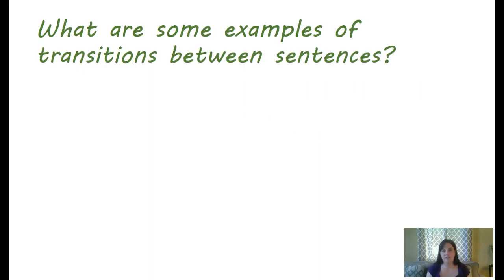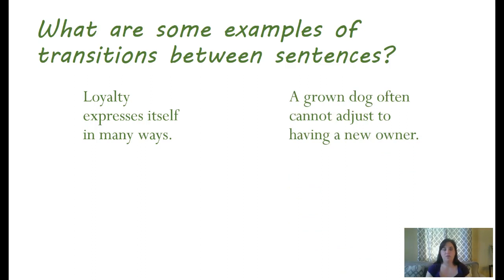So let's look at some examples of transitions between sentences to really see how transitions work. While I'm writing, I might write these two sentences in a paragraph. Loyalty expresses itself in many ways. A grown dog often cannot adjust to having a new owner. Now, without a transition, these might seem like I'm talking about two completely different things. But really, the dog not being able to adjust to a new owner is an example of how loyalty can express itself. So a good transition there would be for example. So now my paper would read, Loyalty expresses itself in many ways. For example, a grown dog often cannot adjust to having a new owner. Now my reader can clearly see the connection between these two ideas.